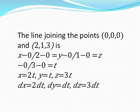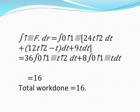So the integral over c of f-bar dot dr equals the integral from 0 to 1 of (24t² dt plus (12t² minus t) dt plus 9t dt). On simplification, that equals 36 times the integral from 0 to 1 of t² dt plus 8 times the integral from 0 to 1 of t dt, which equals 16. So the total work done along the curve from (0,0,0) to (2,1,3) is 16 units.